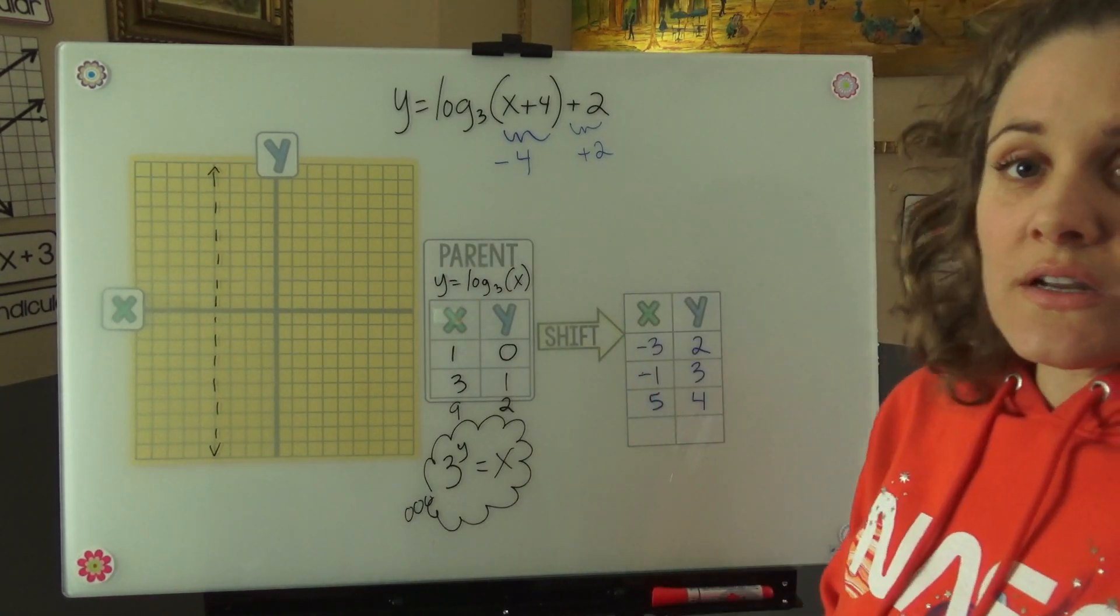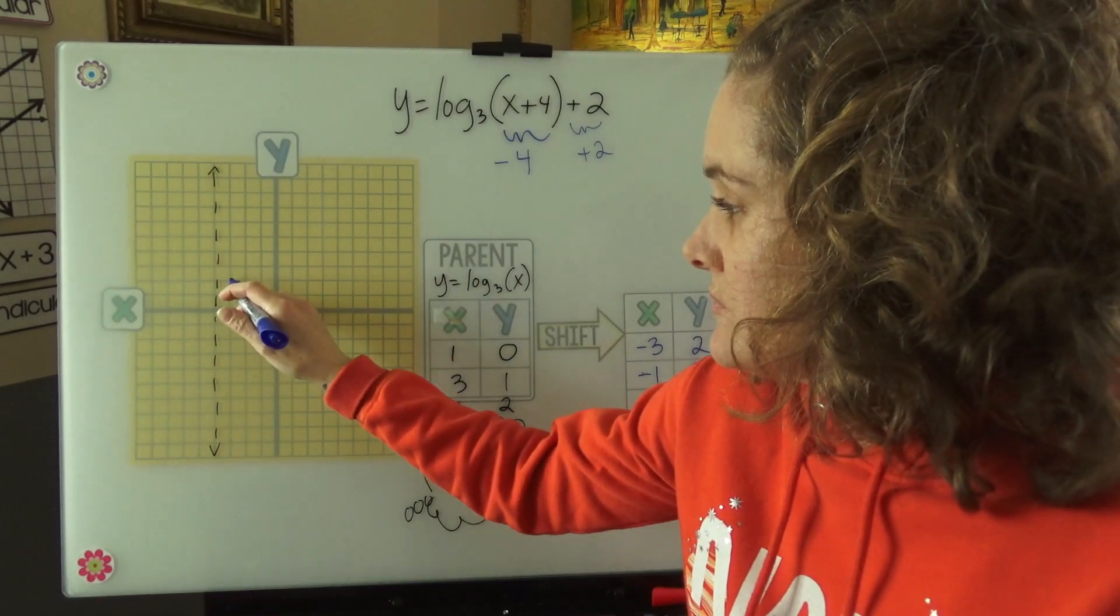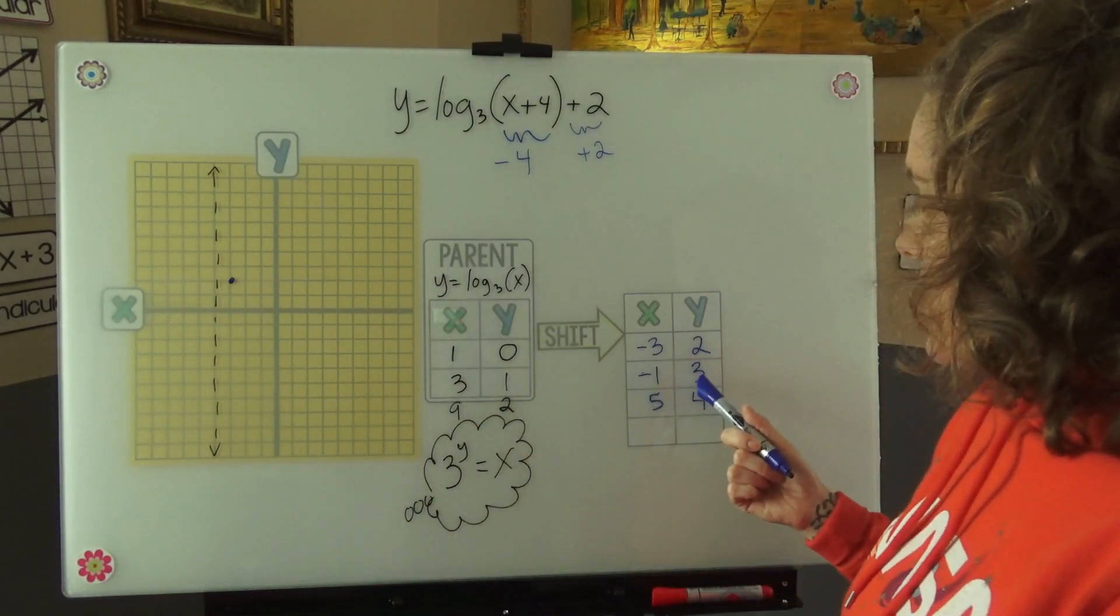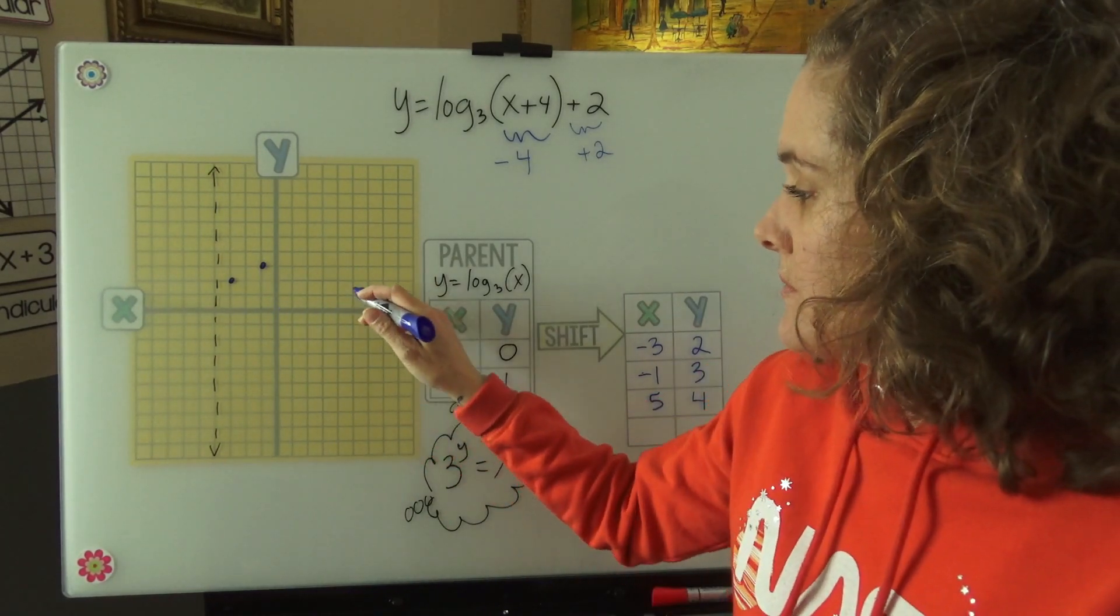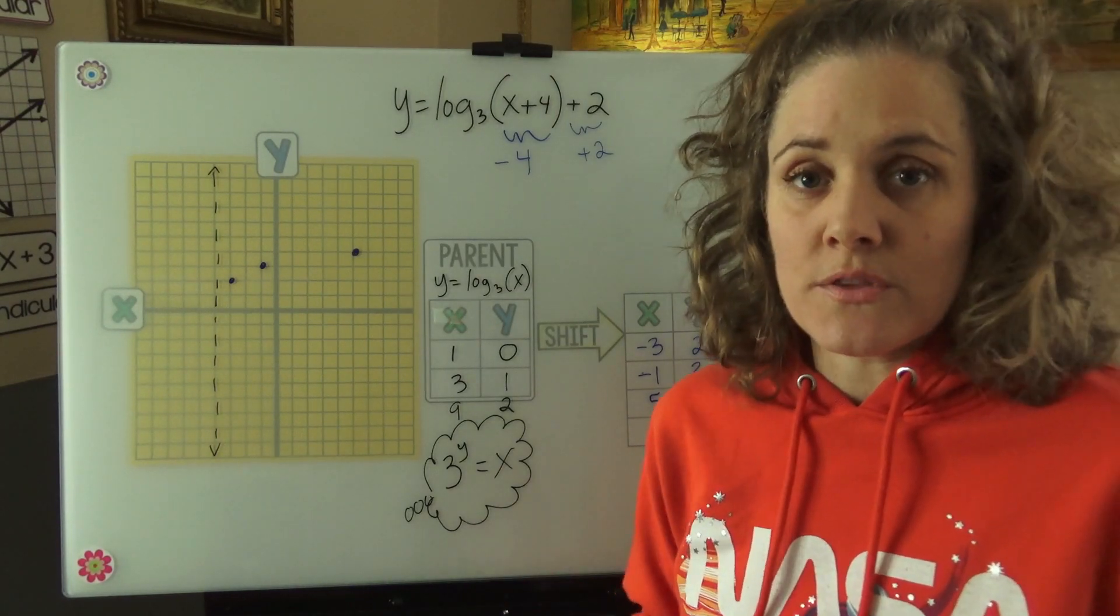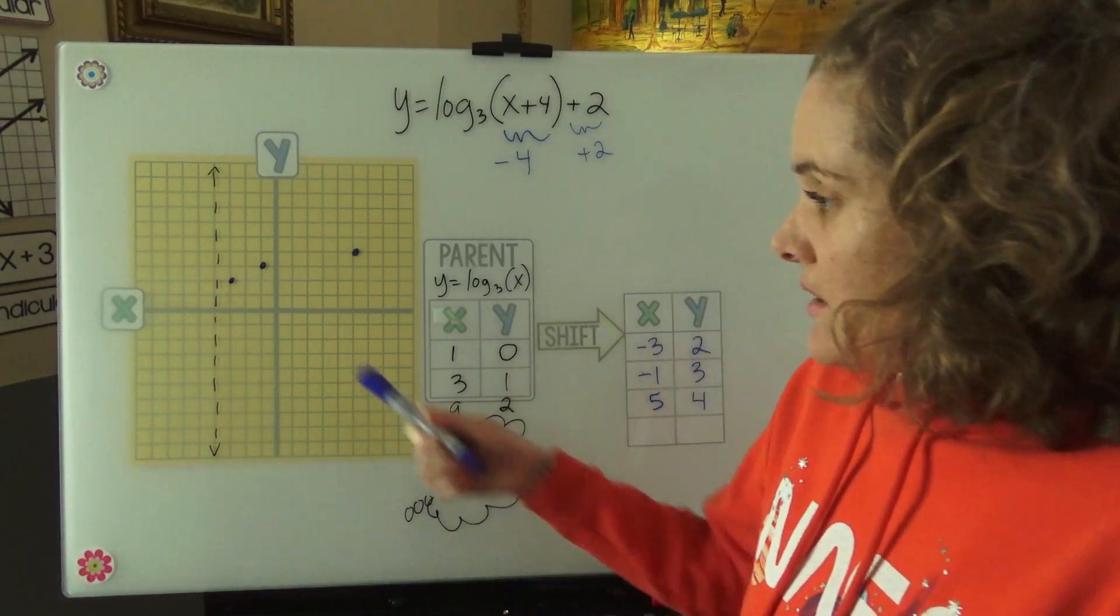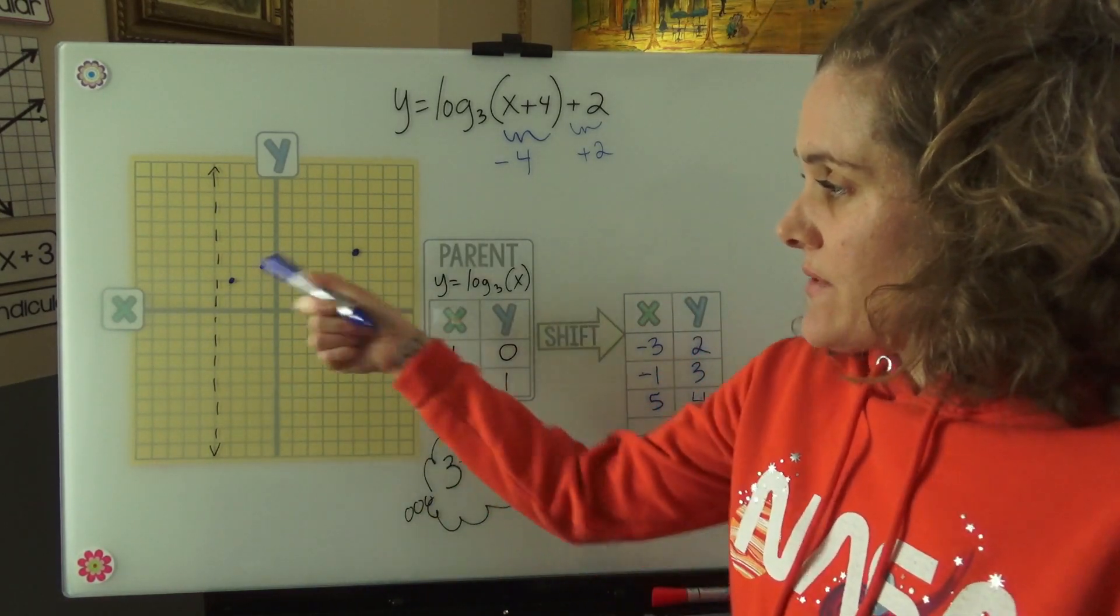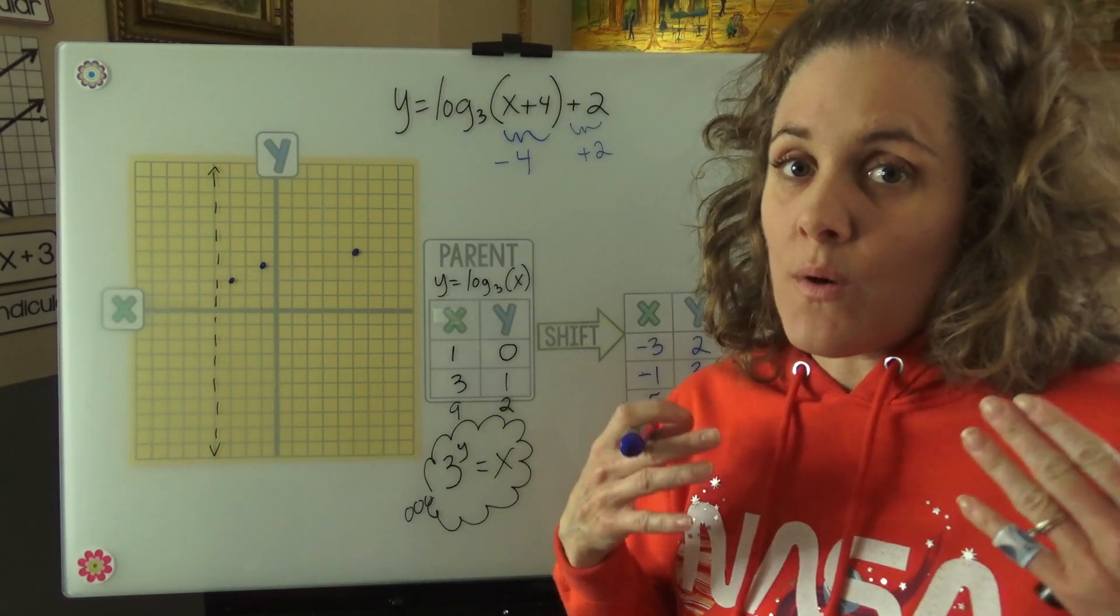So now we have these points here that we can put onto our graph, negative 3, 2, negative 1, 3, and 5, 4. Now we want to remember what these logs look like, what the parent graphs look like, and what the shape looks like. We have our asymptote here, we have our three points here, let's see if we can sketch it in based on what we know about log graphs.